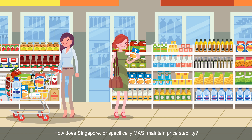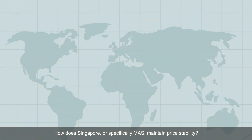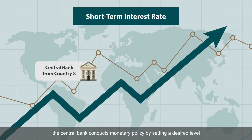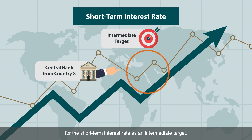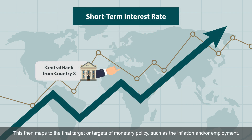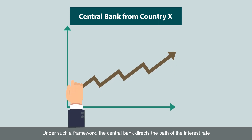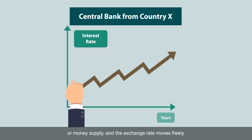How does Singapore, or specifically MAS, maintain price stability? As mentioned earlier, in most countries, the central bank conducts monetary policy by setting a desired level for the short-term interest rate as an intermediate target. This then maps to the final target or targets of monetary policy, such as inflation and/or employment. Under such a framework, the central bank directs the path of the interest rate or money supply, and the exchange rate moves freely.